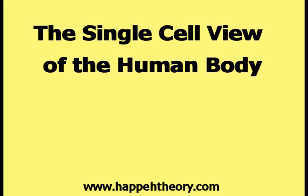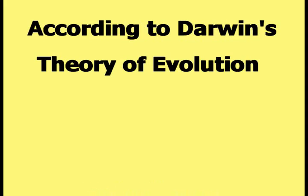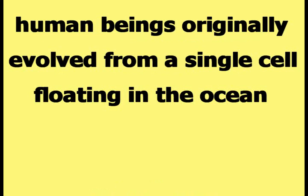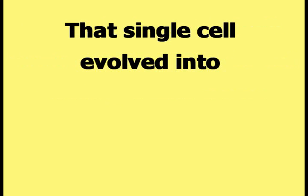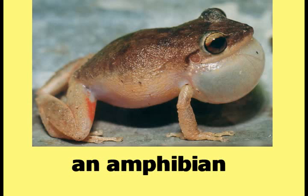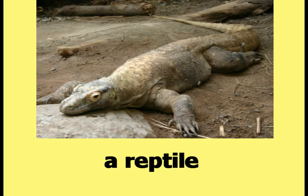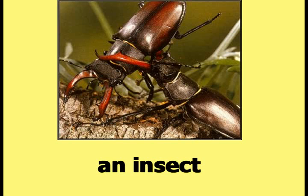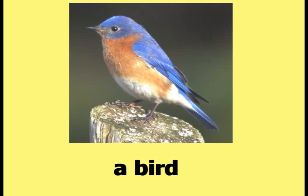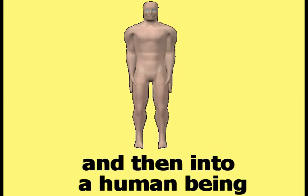This video is about the single cell view of the human body. According to Darwin's theory of evolution, human beings originally evolved from a single cell floating in the ocean. That single cell evolved into a fish, an amphibian, a reptile, an insect, a bird, a mammal, and then into a human being. Here is a two-dimensional picture of a single cell.